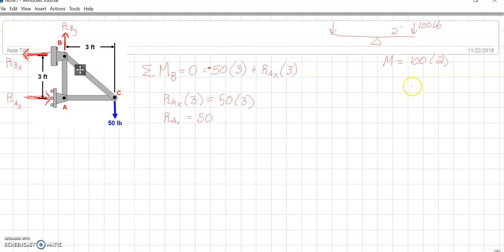Now maybe over here on the side we can do this. So, we've got RAX, RBX, and RB in the Y. We're going to kind of box in our answers as we go along, we'll fill it in. Sorry, and that's pounds. So, what we found was RAX is 50. And we assumed it to the right. Our answer ended up positive. So, we keep the arrow the same direction.